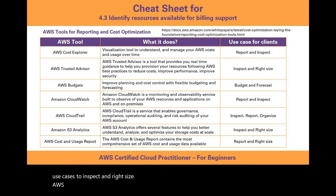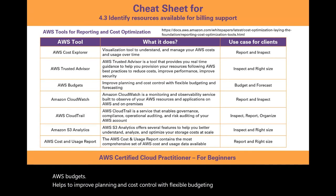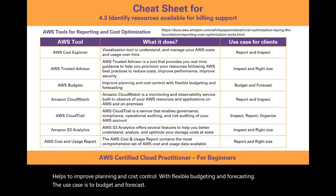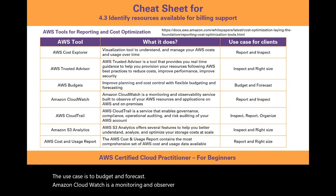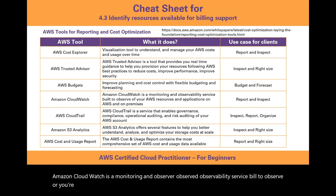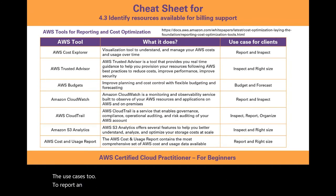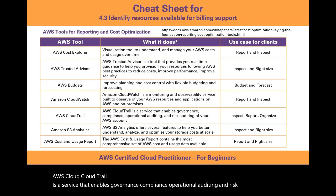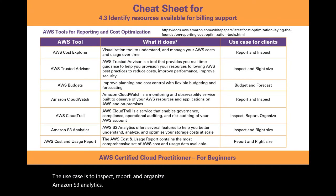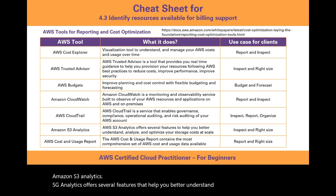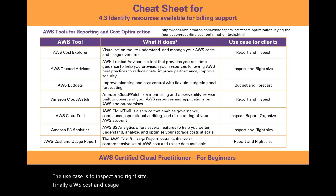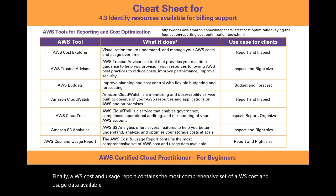AWS Budgets helps improve planning and cost control with flexible budgeting and forecasting (use case: budget and forecast). Amazon CloudWatch is a monitoring and observability service for AWS resources and on-premises applications (use case: report and inspect). AWS CloudTrail enables governance, compliance, and operational and risk auditing of your AWS account (use case: inspect, report, and organize). Amazon S3 Analytics helps you understand, analyze, and optimize storage costs at scale (use case: inspect and right-size). The AWS Cost and Usage Report contains the most comprehensive set of AWS cost and usage data available (use case: report and right-size).